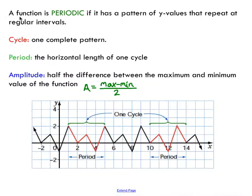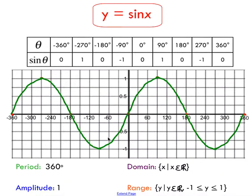So the first thing I want to mention is that sine and cos are part of a family of functions that are referred to as periodic functions. So a function is considered periodic if it has a pattern of y values that repeat at regular intervals. We saw that when we graphed sine and cos that we have this sort of repeating pattern as we move from left to right.